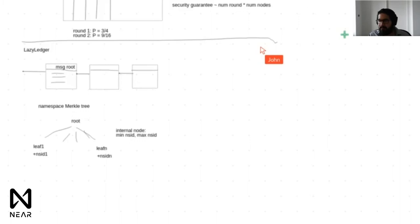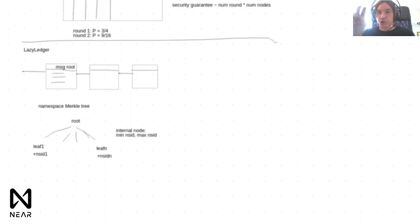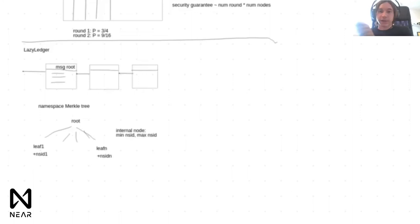In Serenity, every validator needs to fully validate the shard they're assigned to, but also run data availability checks on all other shards — so they're a full node in their shard and a light client in others. In lazy ledger, every validator is a full node in terms of downloading all transactions, but no node — not even a light node — processes them. In Serenity, in terms of both processing and downloading, you're a full node in one shard and a light node in others.